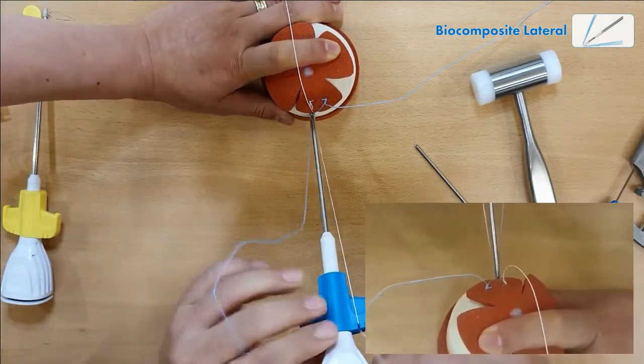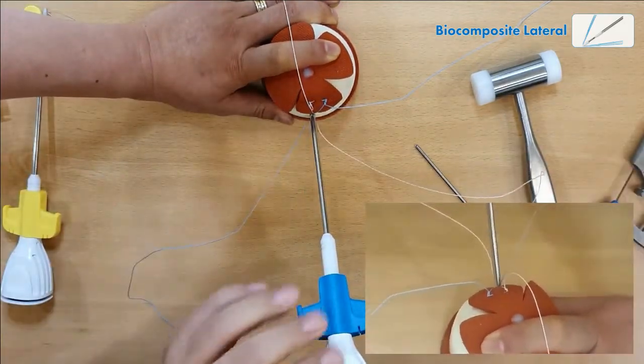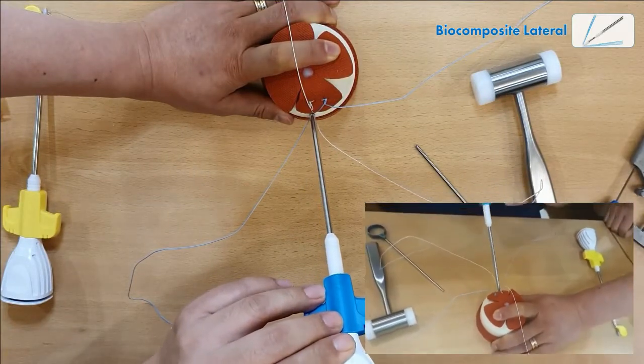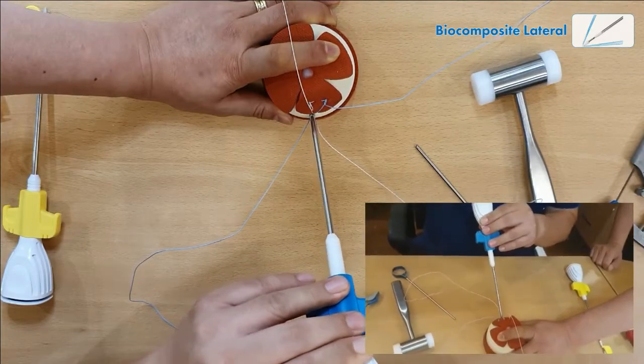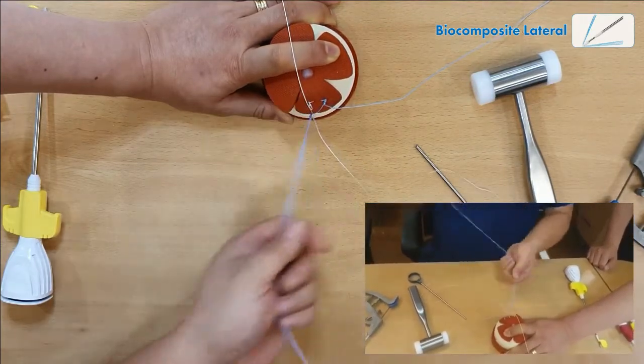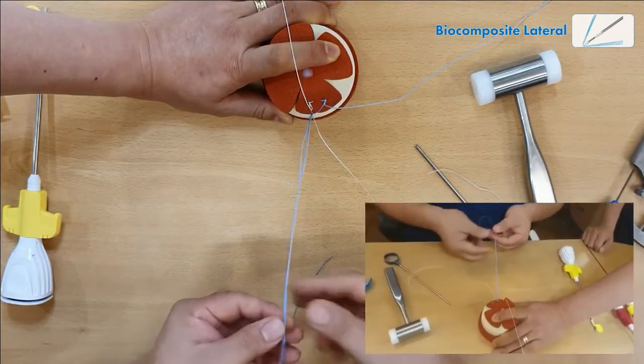Now, it's done. Just remove the fiber wire and we have extra fiber wires on the top. Remove that. Now, we are done with the first lateral anchor.